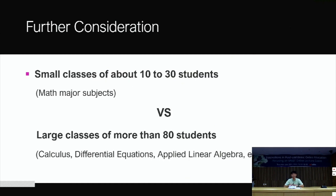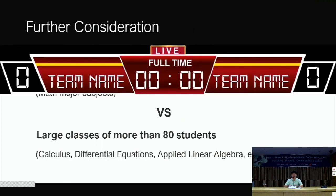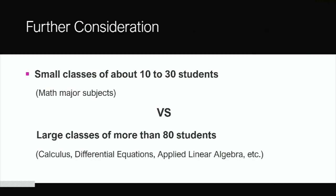And also, further consideration is to be focused on the class size. So small classes of about 10 to 30 students or large classes of more than 80 students. As for small classes, such as math major courses, we didn't have much problem in managing students and monitoring students. But for large class courses, such as calculus, differential equations, and applied linear algebra, we had some trouble monitoring students' achievements and student studying material.